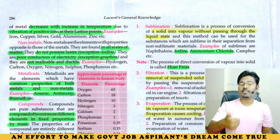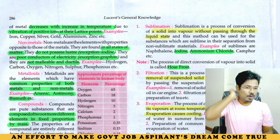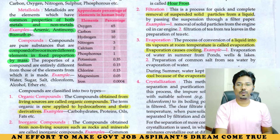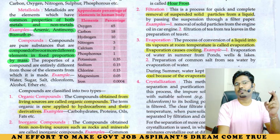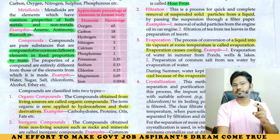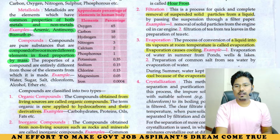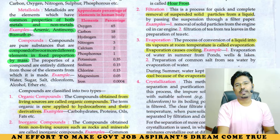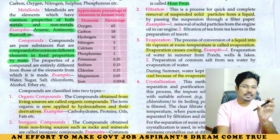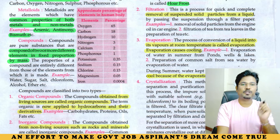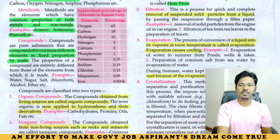This is important in CGL 2023. Now, compound is a pure substance which is composed of two or more different elements in fixed proportion by mass. Elements are combined in fixed proportion by mass to form a compound.